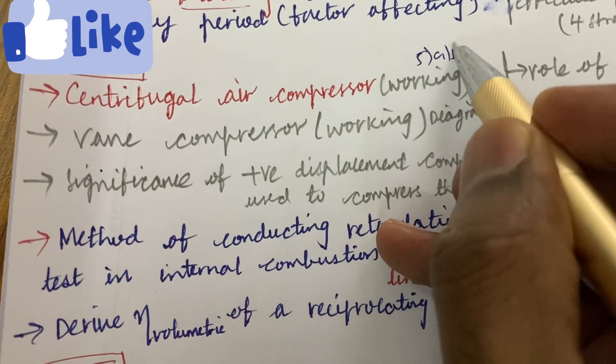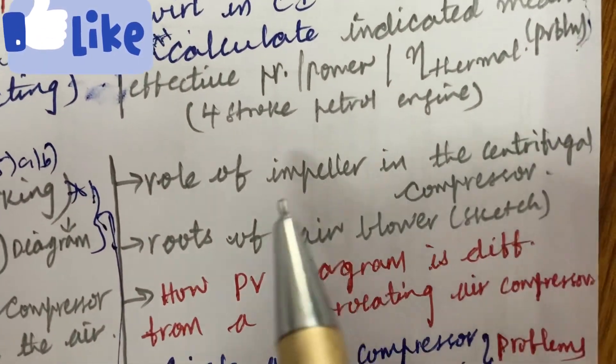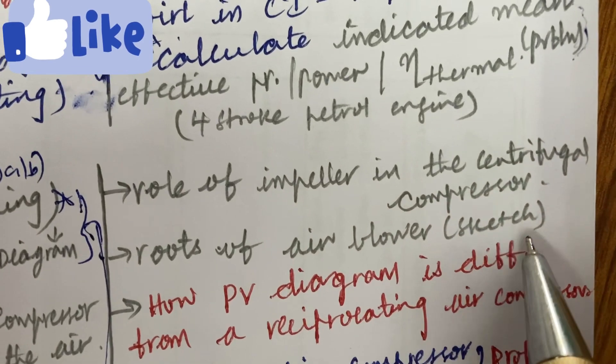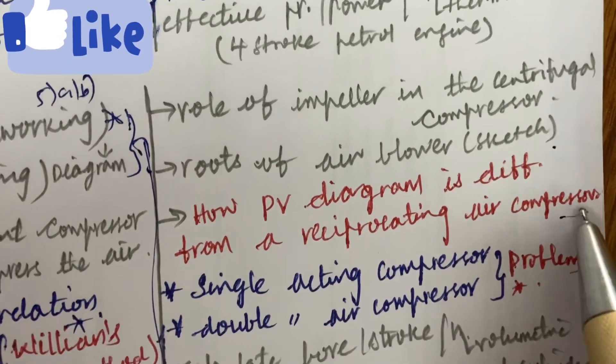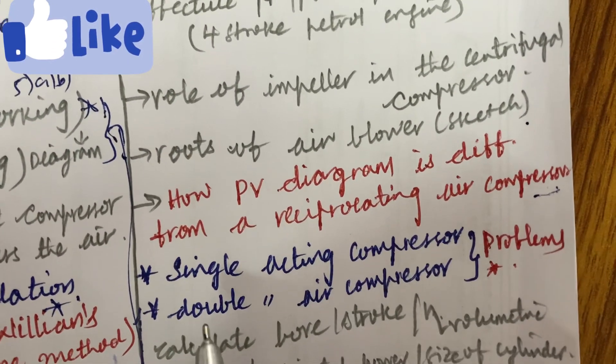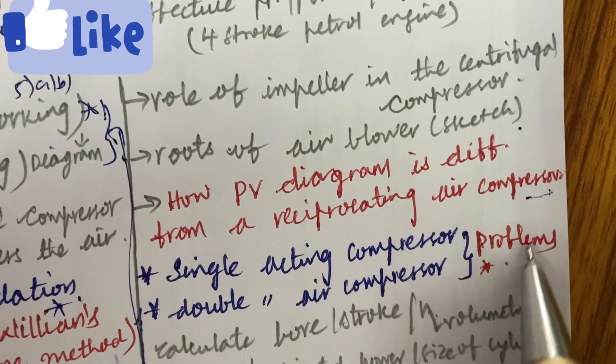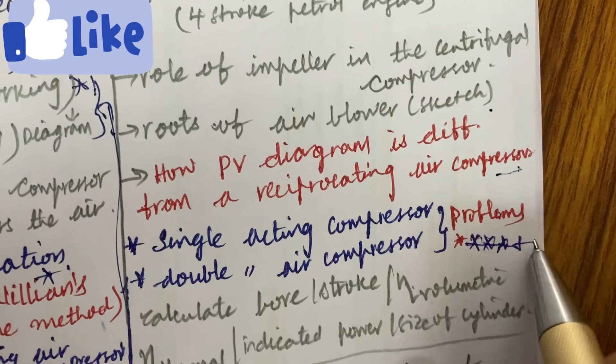We can expect 5A as well as 5B from this part. The role of impeller in the centrifugal compressor and the roots of air blower along with the neat sketch. Explain the term as well as how PV diagram is different from the reciprocating air compressor and the single-acting versus single-acting compressor as well as double-acting air compressor.